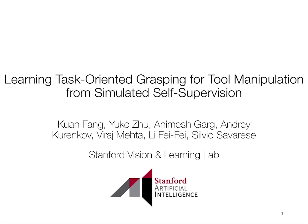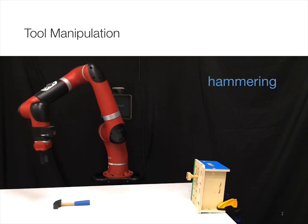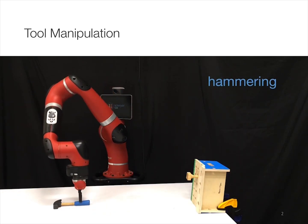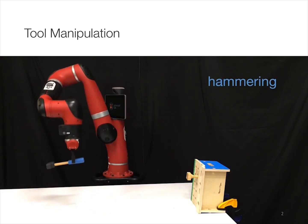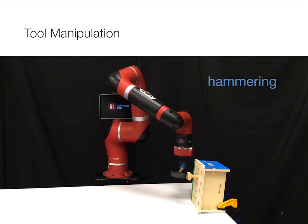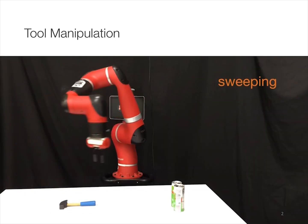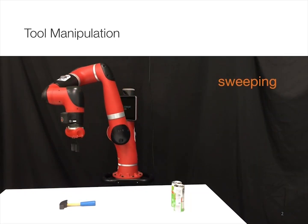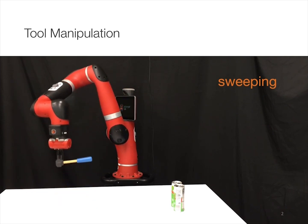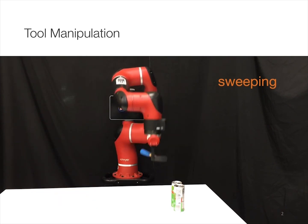This video is about learning task-oriented grasping for tool manipulation from simulated self-supervision. Tool manipulation is a vital skill for achieving generalizable robot autonomy. In this work, we aim to control a 7-DOF robot arm to grasp unseen objects as tools and complete the desired tasks.